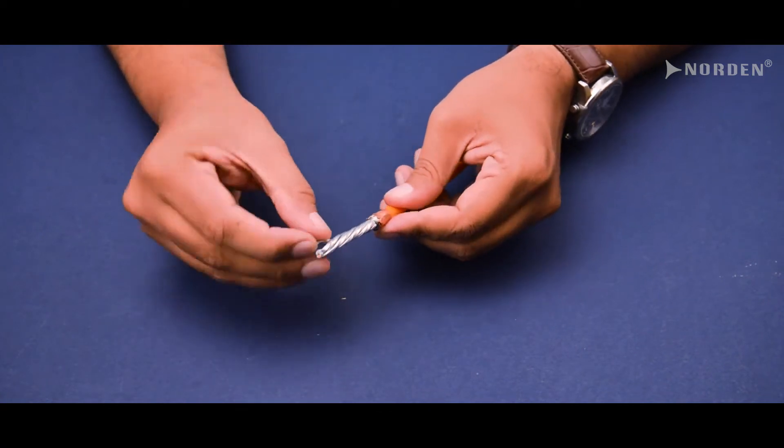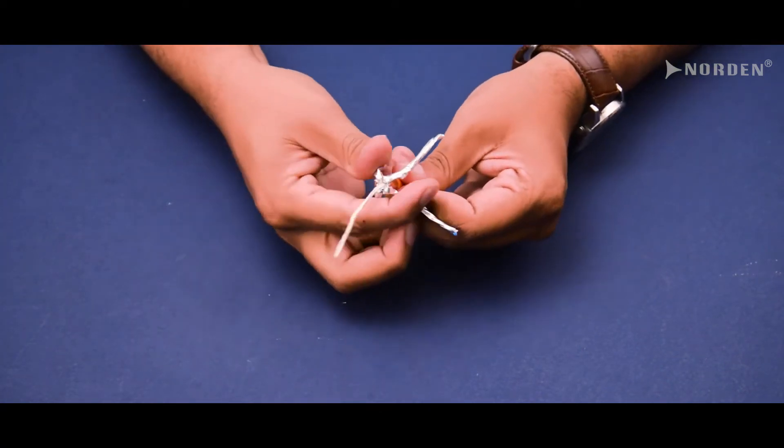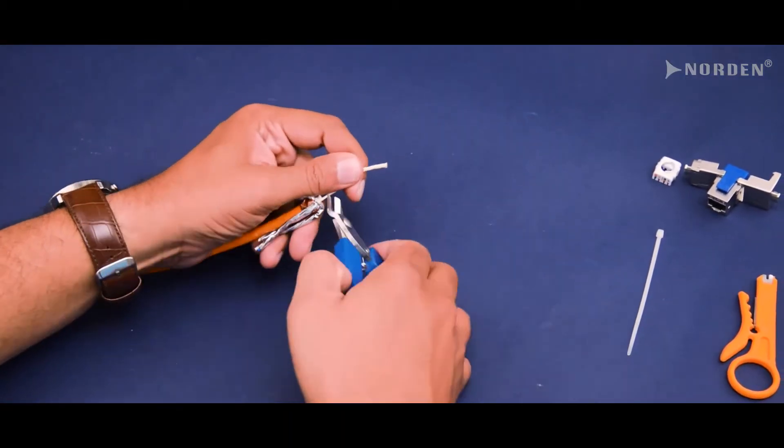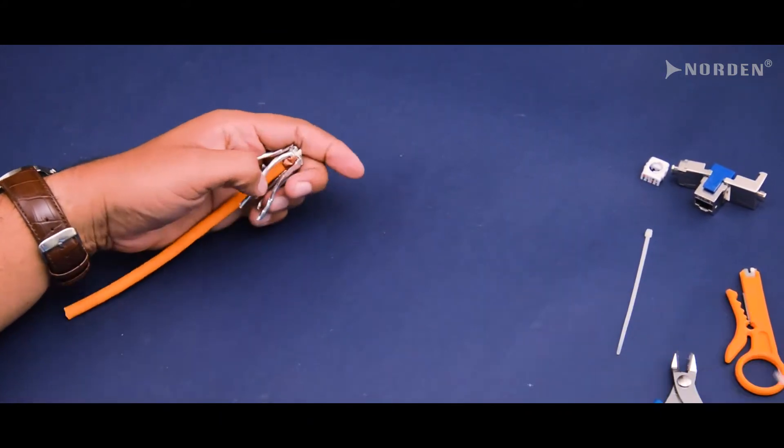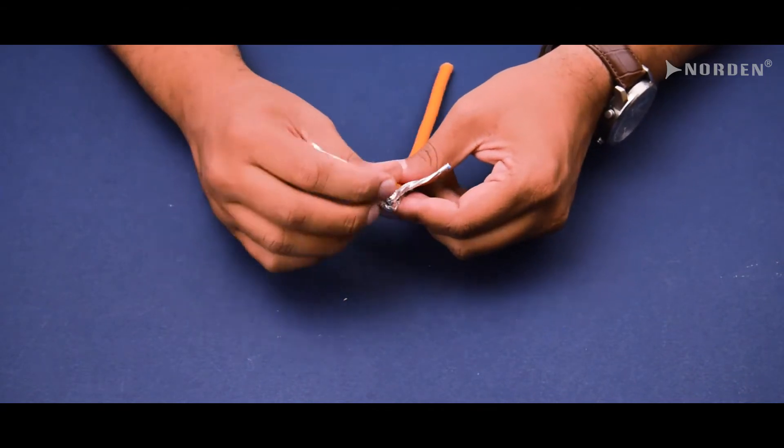Once done, we now need to separate each pair and cut the ripcord using the cable cutter. Remove and cut the aluminum tape foil that shields each pair.